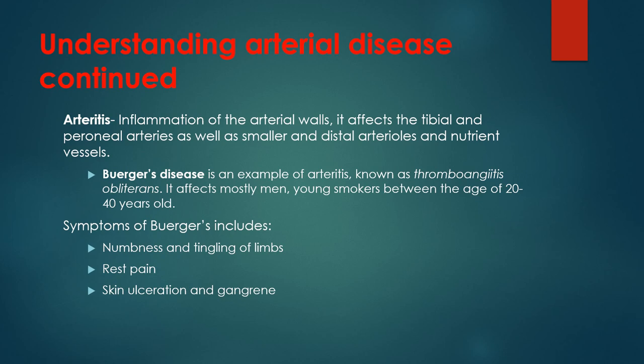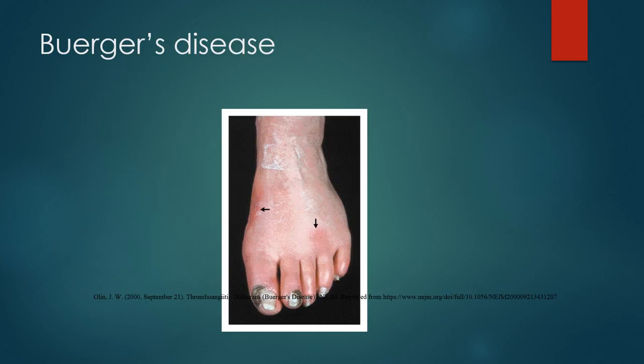Arteritis is inflammation of the arterial walls, affecting the tibial and peroneal arteries as well as smaller distal arteries and nutrient vessels. Buerger's disease — also known as thromboangiitis obliterans — is an example of arteritis. It affects mostly young male smokers between ages 20 to 40 years old. Symptoms include numbness and tingling of the limbs, rest pain, skin ulceration, and gangrene. Images of Buerger's disease show visible discoloration in the toes.